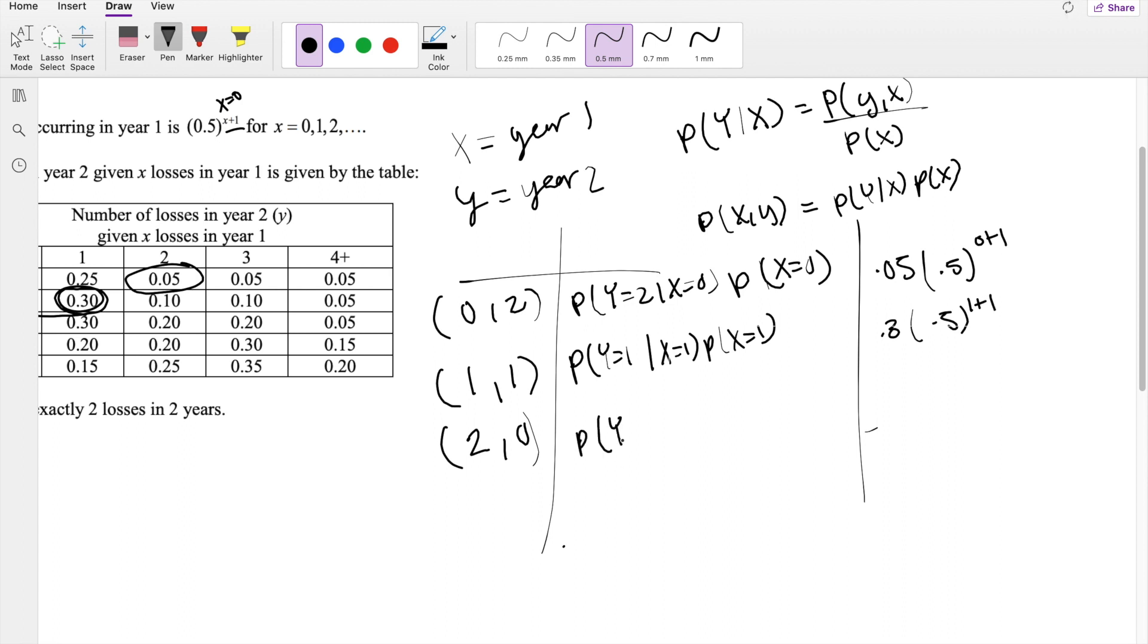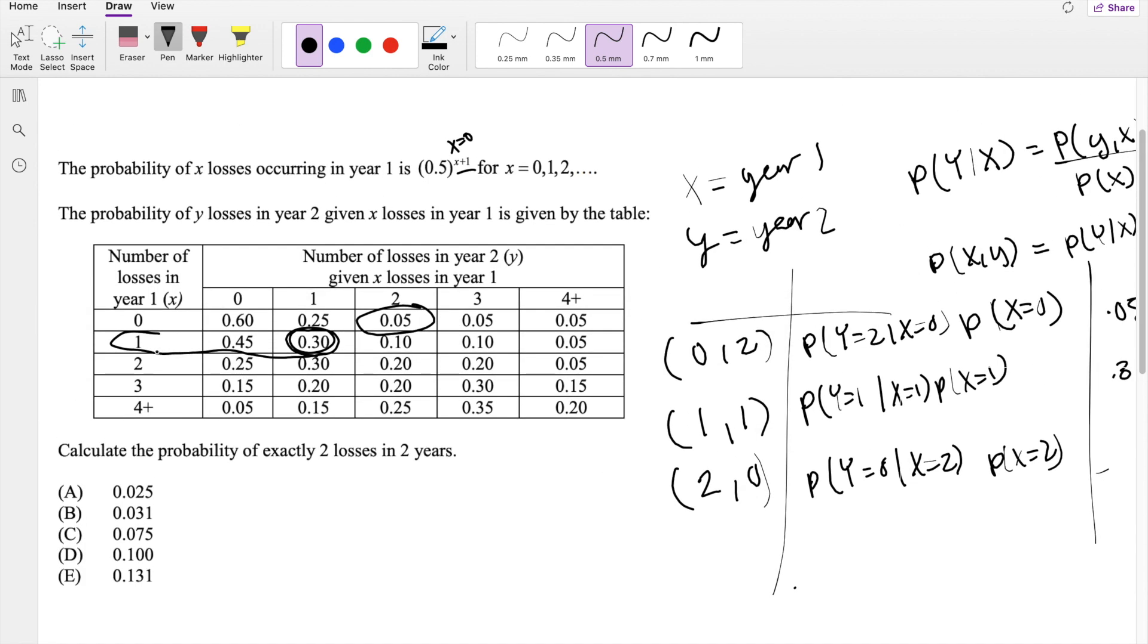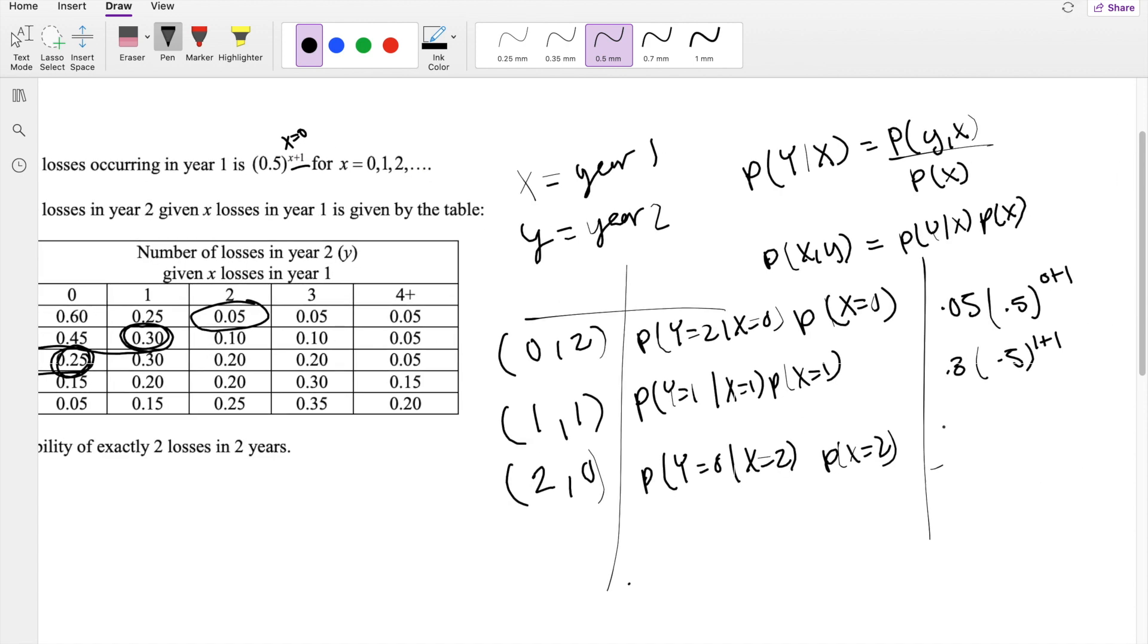And lastly, the probability of Y equals 0 given X equals 2 times the probability of X equals 2. So given X equals 2, Y equals 0 is here, 0.25. That's 0.25 times 0.5, so 2 plus 1.